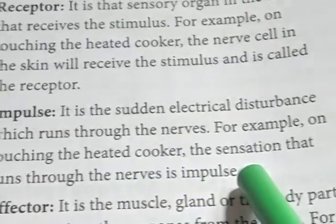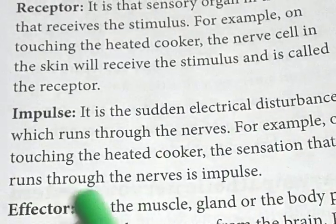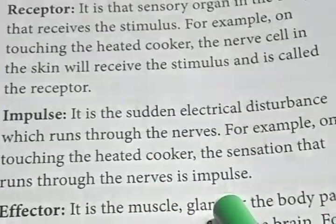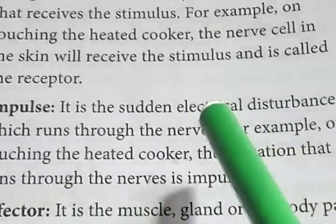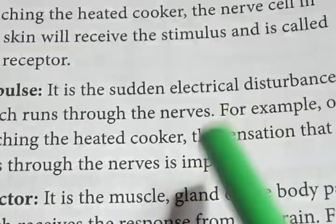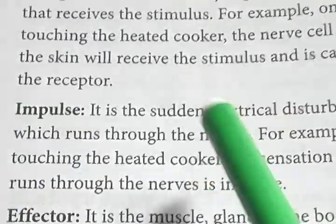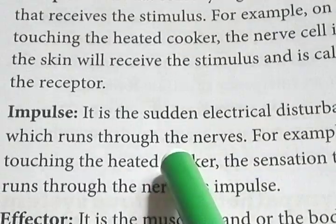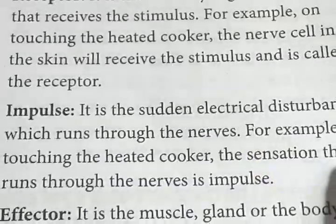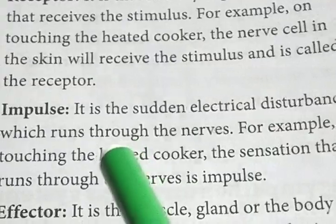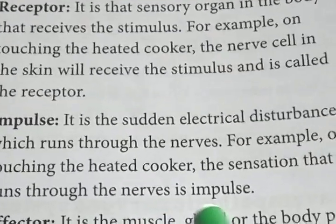For example, on touching the heated cooker, the sensation that runs through the nerves is called impulse. This sensation we collect from outside is called impulse.